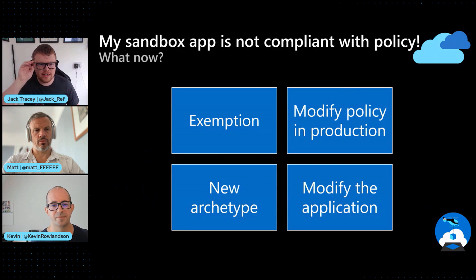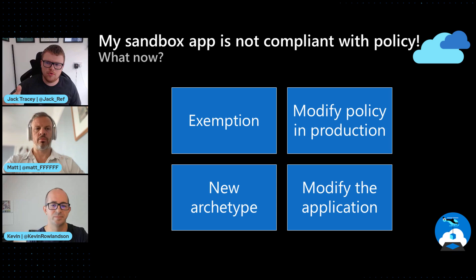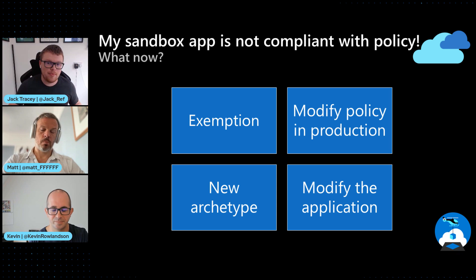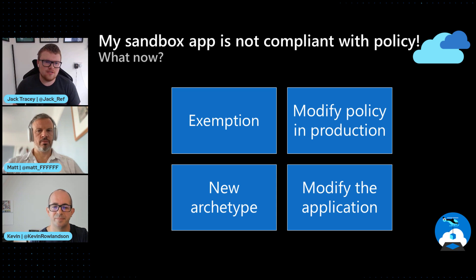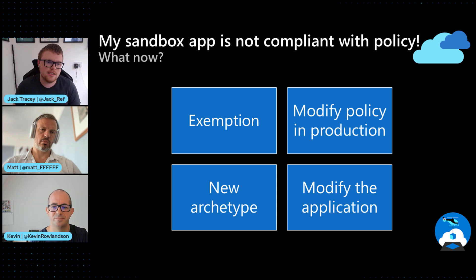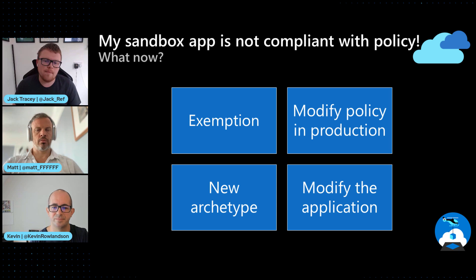Taking that on from where we've talked about those different applications and different maturity levels, you may get to a point where your sandbox app that you've tried out — version two or a new service — isn't compliant with the policies applied there. What do we do? There are a few options. Number one: you can create exemptions — not exceptions, very key to call out. Exemptions are like temporary or even permanent waivers with a detailed reason and justification of why this isn't compliant with the policy, something you'd work with the platform team to put in place on your subscription or even a more refined scope like an individual resource group.